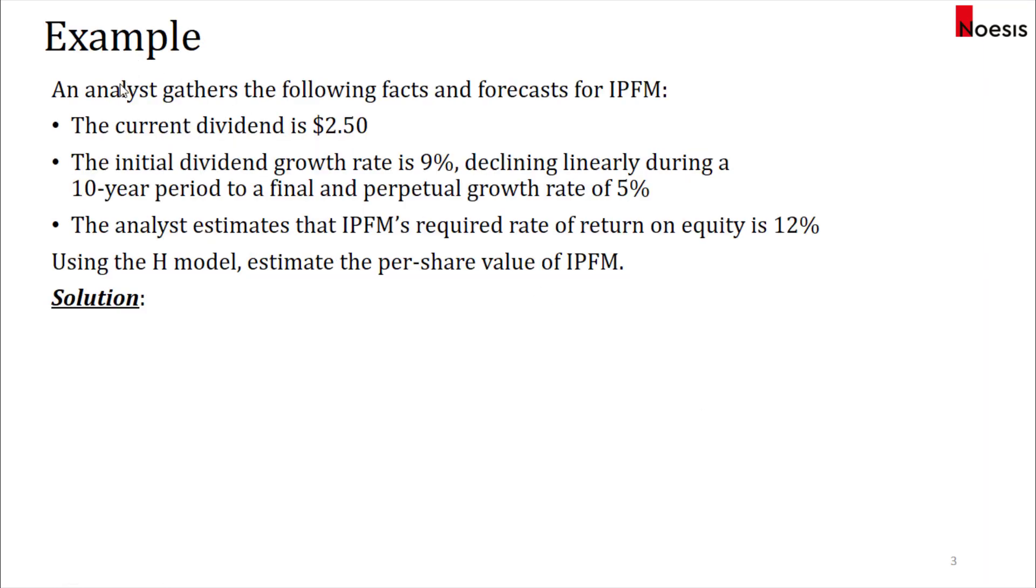Now let's look at an example, where an analyst gathers the following facts and forecasts for a share called IPFM. The current dividend is $2.50. The initial dividend growth rate is 9%, declining linearly during a 10-year period to a final and perpetual growth rate of 5%. The analyst estimates that IPFM's required rate of return on equity is 12%, and using the H model, estimate the per share value of IPFM.